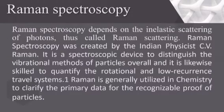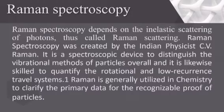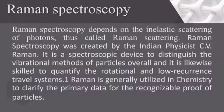Raman spectroscopy was developed by Indian physicist C.V. Raman. It is a spectroscopy tool to identify the vibrational modes of molecules, and is also capable of measuring rotational and low-frequency transitions. Raman spectroscopy is widely used in chemistry to elucidate structural information for identification of molecules. It depends on the inelastic scattering of photons, known as Raman scattering, using single-wavelength laser light in the near-ultraviolet, visible, or near-infrared range. The change in energy of the laser photons shows information related to vibrational modes.